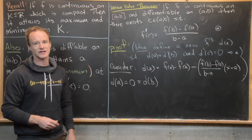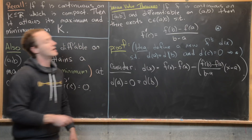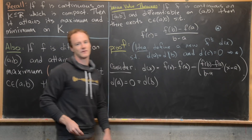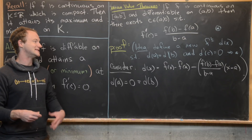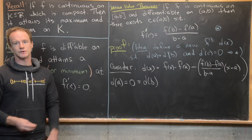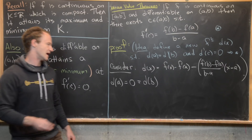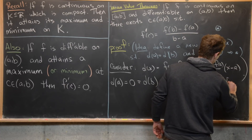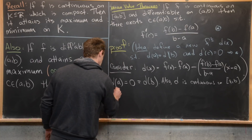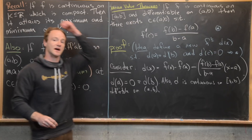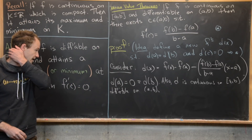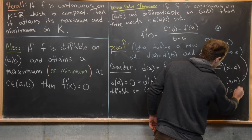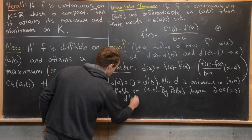Furthermore, because d of x is a combination of functions — namely F of x, which is continuous on [a, b] and differentiable on (a, b), and the linear function which is everywhere differentiable — d of x itself is continuous on the closed interval [a, b] and differentiable on the open interval (a, b). That's because it's a sum of two functions that share that property. By Rolle's theorem, there exists some C between a and b such that d prime of C is equal to zero.